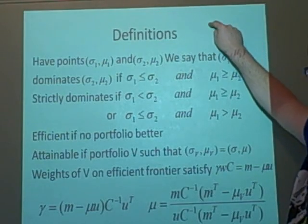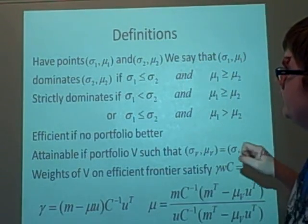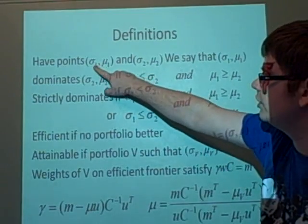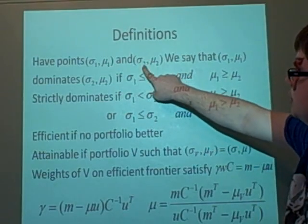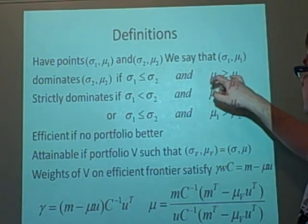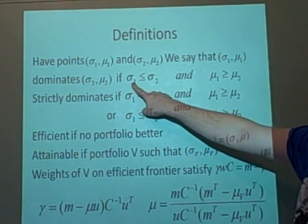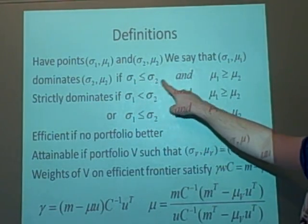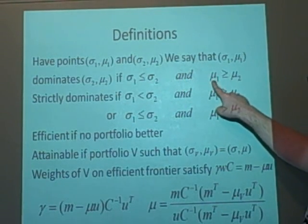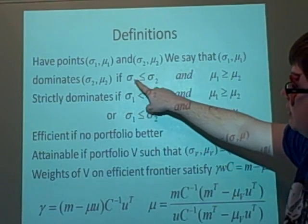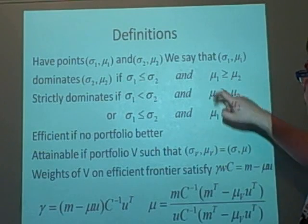we say that that point dominates another point if we've got a standard deviation one and mean one, two and two, we say that one dominates another if the sigma one is less than or equal to sigma two and mu one is greater than or equal to mu two. So it either has less risk and more return.